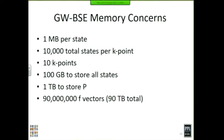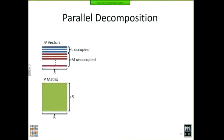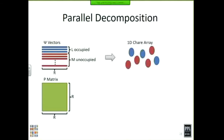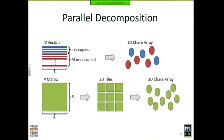So we need to figure out how to manage this computation and all the memory. For the parallel decomposition: our two primary data structures are the psi vectors and the P matrix. We have L-occupied psi vectors and M-unoccupied psi vectors with elements in real space — we put one state in each element of a 1D chare array and the runtime system distributes that across our nodes. For the P matrix, we decompose it into tiles, put each tile into a 2D chare array element, and map those across nodes.